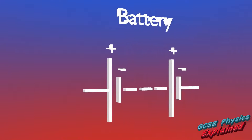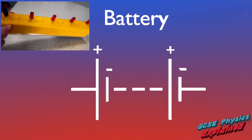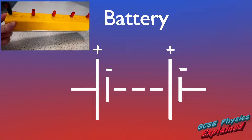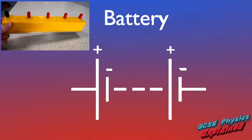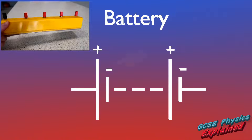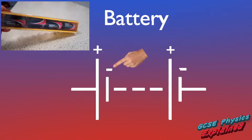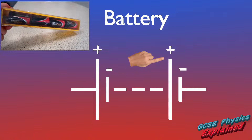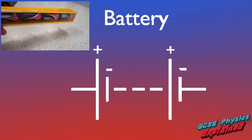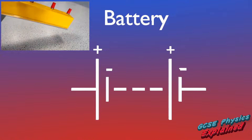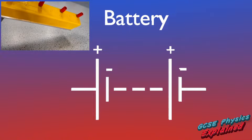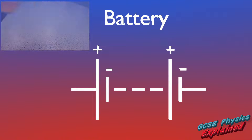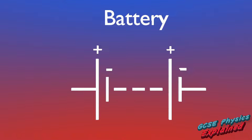The battery is a collection of cells joined together in series, with the negative end of one cell connected to the positive end of the next. It provides a large amount of electrical energy to push electrons around a circuit and produces bigger currents.